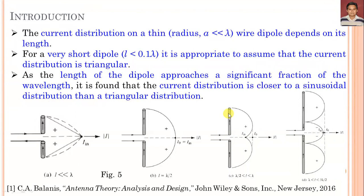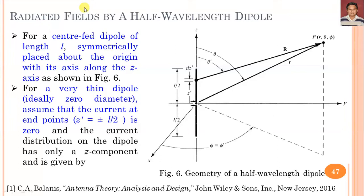We have also discussed calculation of radiation resistance, or input resistance, for categories C and D as seen in figure 5. One by one, we calculate the radiation resistance for these different configurations. For the half wavelength dipole, the geometry is placed along the Z axis, center-fed with total length L. Since we are not taking L equal to lambda by 2 initially, we refer to it as a finite length dipole.